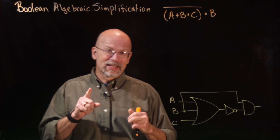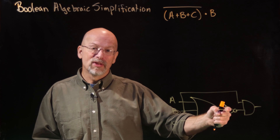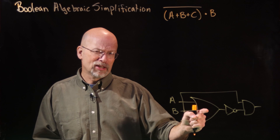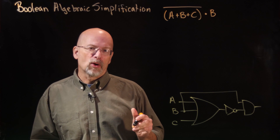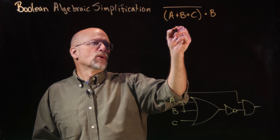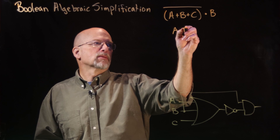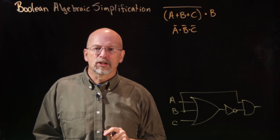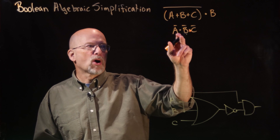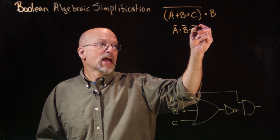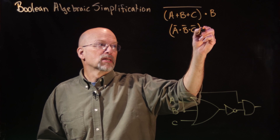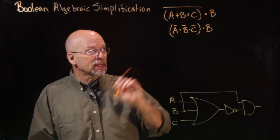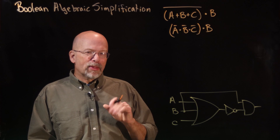Remember, De Morgan's is our friend. De Morgan's says I can move this inverter back through the OR gate and distribute it to the inputs, if I change that OR to an AND. So what I can do is write A and B and C, with bars over each of those elements. This becomes A-bar AND B-bar AND C-bar, and I can keep the parentheses ANDed with B.